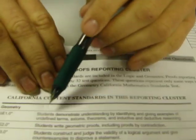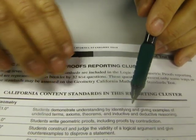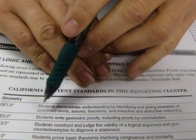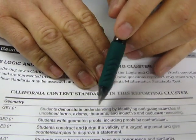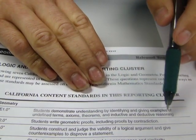Standard 1 says students demonstrate understanding by identifying and giving examples of undefined terms, axioms, theorems, and inductive and deductive reasoning. So that's a lot of stuff.